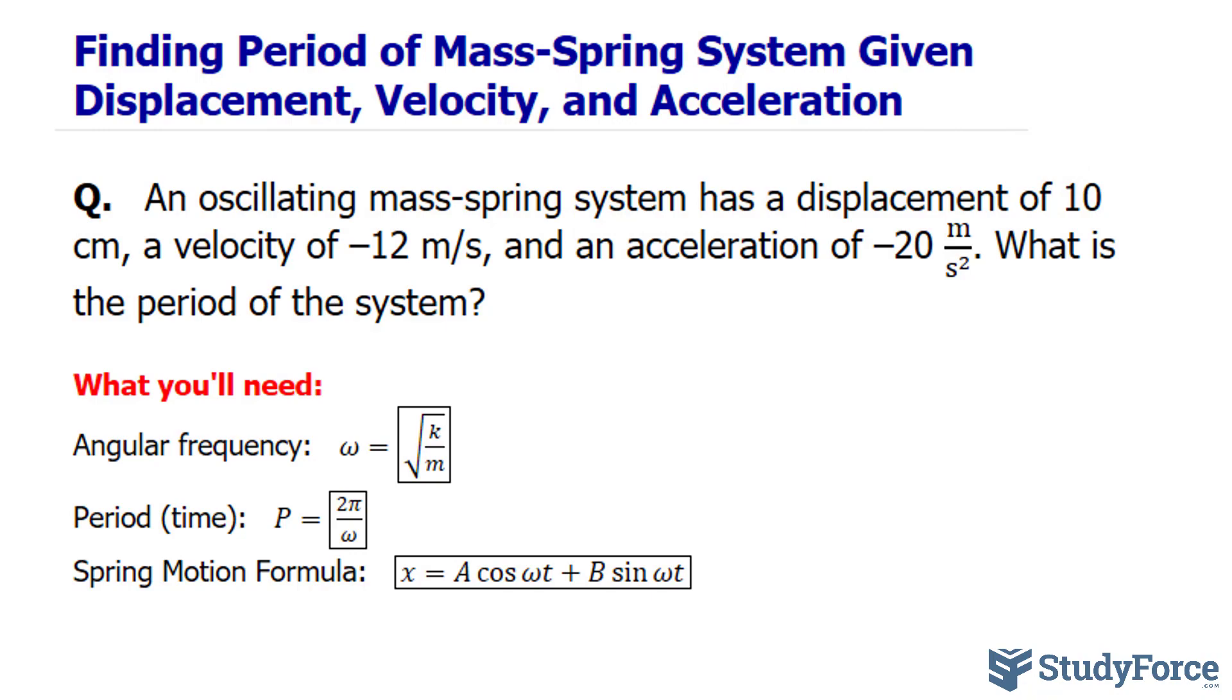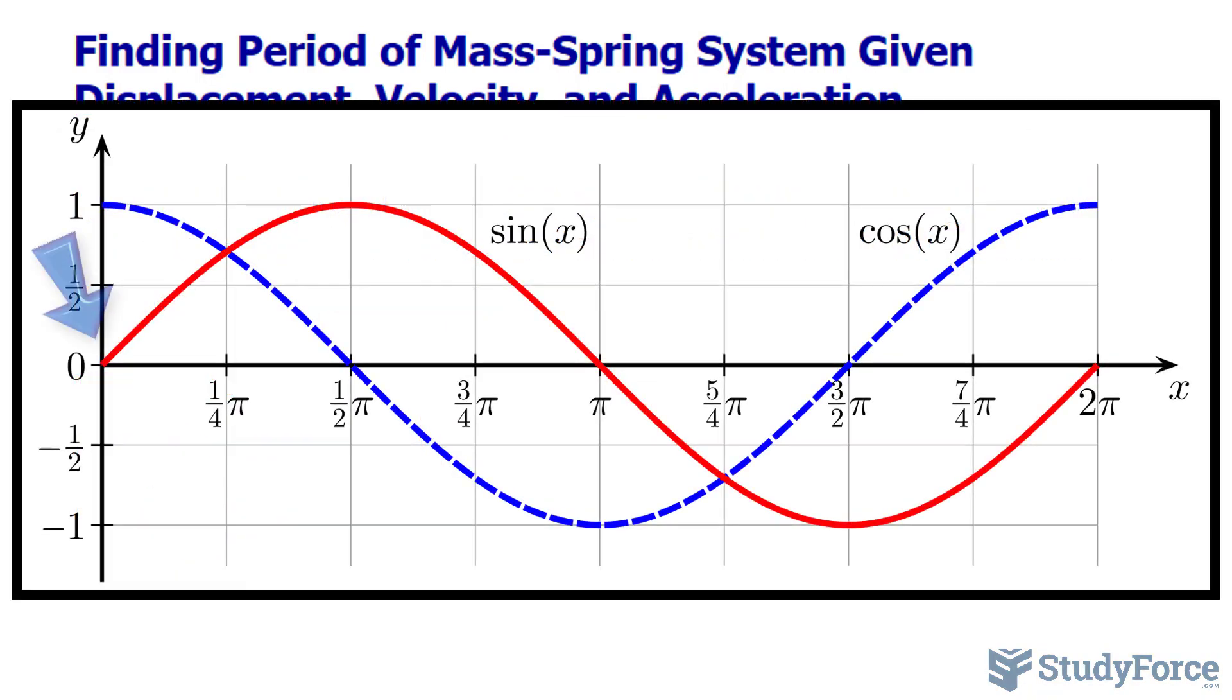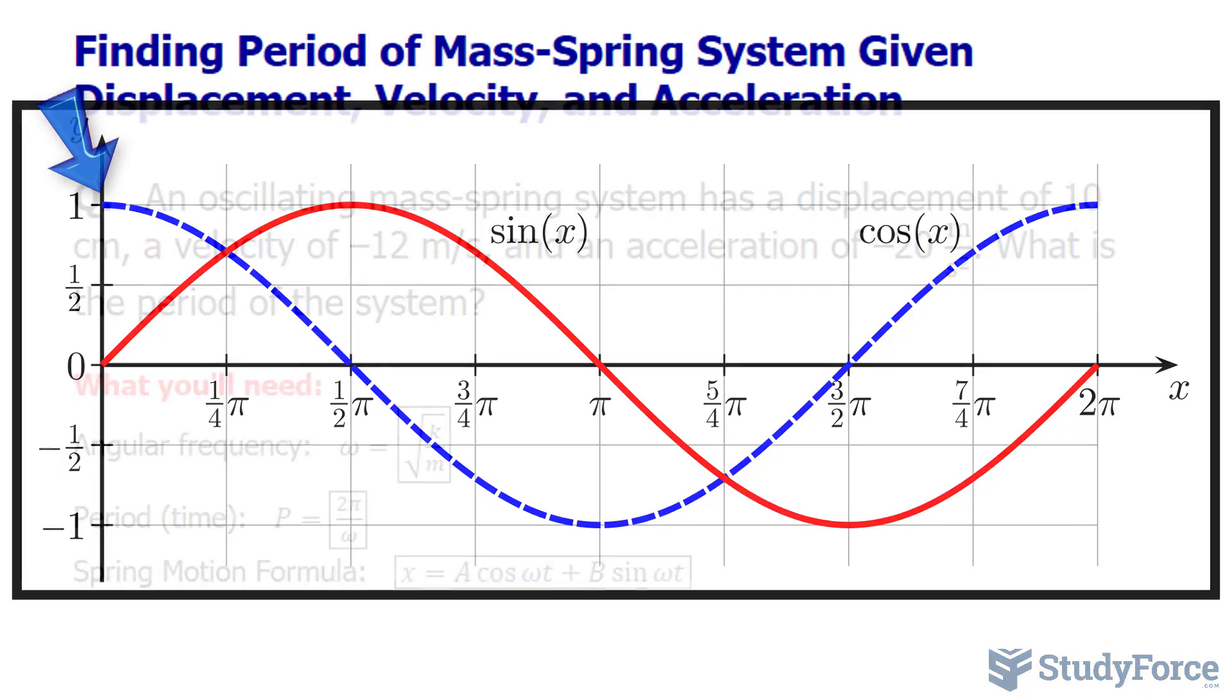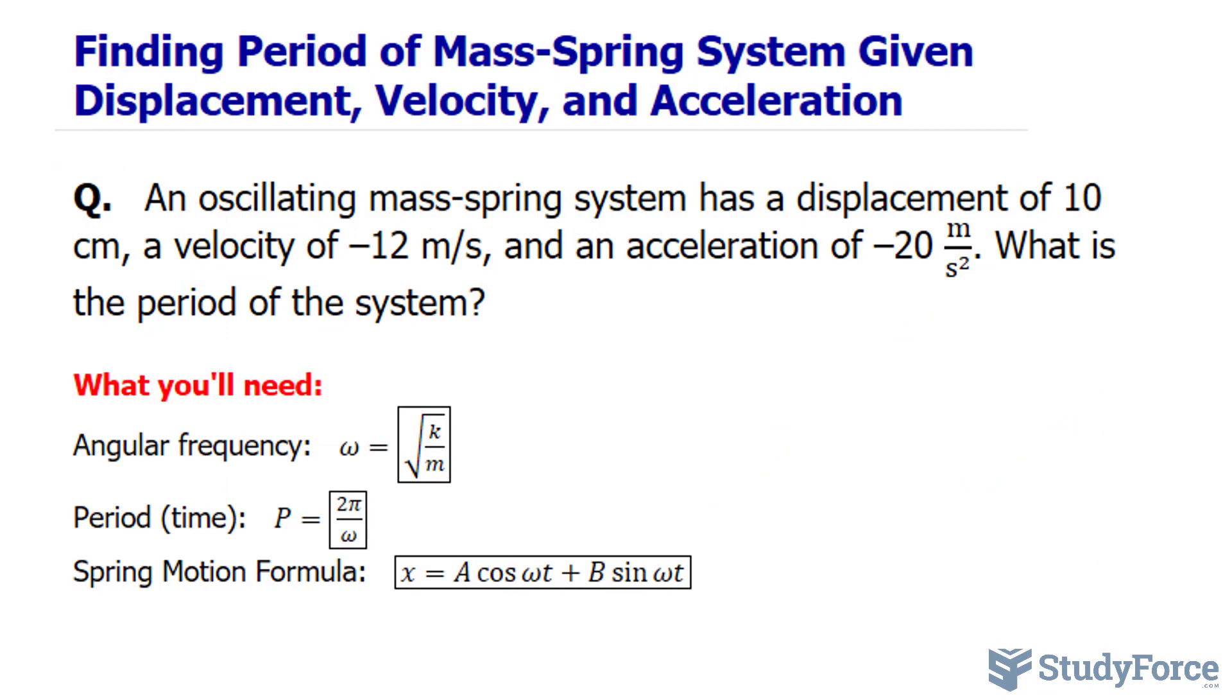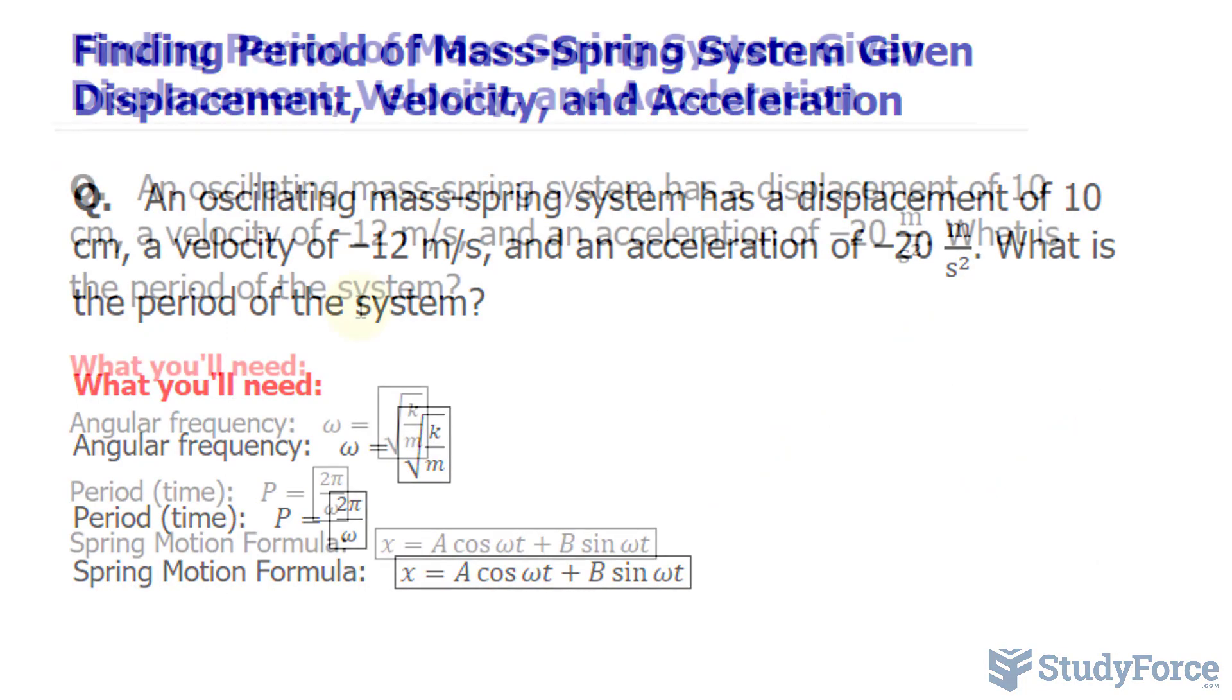Generally, the sine function at zero outputs to zero. Notice the graph on your screen for reference. Cosine, on the other hand, is at its maximum when t is equal to zero. So far, modeling this scenario using cosine is a better fit for displacement. Let's write that down.